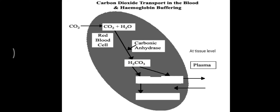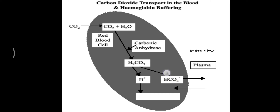Inside the red blood cell, carbon dioxide combines with water molecules with the help of the enzyme carbonic anhydrase to make carbonic acid (H2CO3). This H2CO3 is again broken down by the same enzyme, carbonic anhydrase, to form H+ (proton) and bicarbonate ion (HCO3-). This HCO3- is the important base of our bicarbonate buffer system. The bicarbonate goes outside of the red blood cell into the plasma, helping to maintain our bicarbonate buffer system as part of pH regulation.